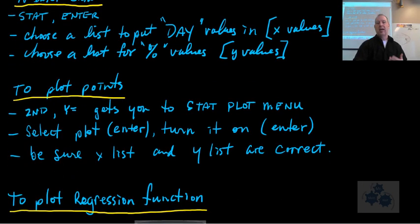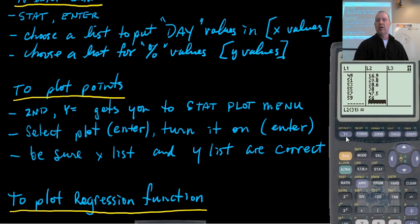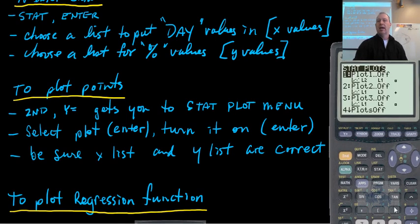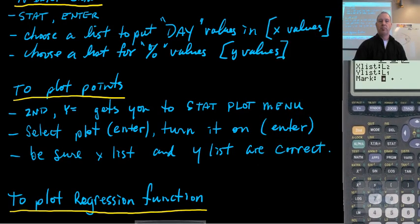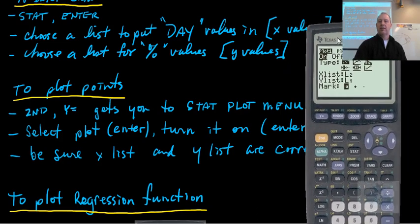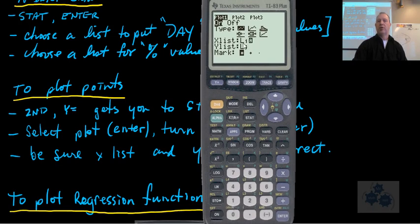Now to plot the points, and again, this hopefully should be something that you do remember from before, but if not, the notes are up here. So to plot the points, you're going to want to go to second function y equals. That's the plots, and you're going to want to hit enter so that we can get into plot 1, let's say. Then hit enter again to turn it on. So you want to get it on. Now the x lists, so in mine here, mine are set to the wrong lists, so I have to change that. So what you do is you use the second function, and you hit number 1 if you want to put list 1 in there, and second function 2 to put list 2. The type here, just make sure it's the first one, and the mark doesn't really matter so much. Okay, so you've got it on. You've got your lists properly assigned.